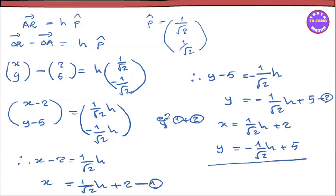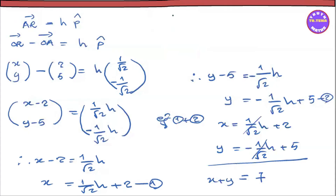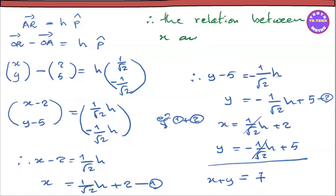Now the equation is x plus y. Combining the parametric equations: 2 and 5 is 7. So x plus y is equal to 7. Therefore, the relation between x and y is x plus y equal to 7.